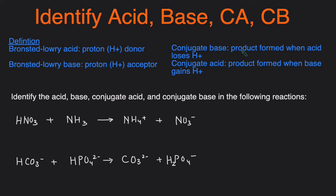Conjugate base is the product that's formed when an acid loses H+, and then the conjugate acid is the product that's formed when the base gains the H+. This will all make a lot of sense when we look at some examples.